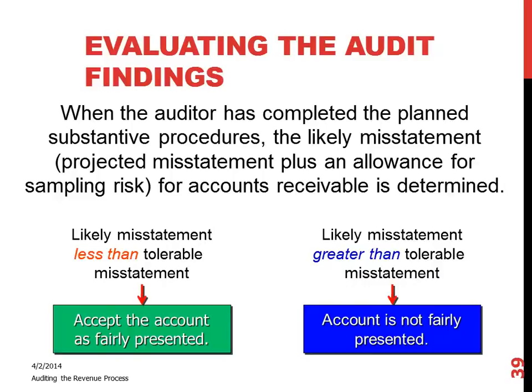The auditor has to consider those errors in total and ask: what is my misstatement? If your misstatements are less than the tolerable materiality limit for that account — the level the auditor set back in the planning stage — then you can conclude that the account is fairly stated, because the differences are not considered material. If it's greater than the tolerable materiality level the auditor is willing to accept, then the auditor is going to conclude that the account is not fairly presented.